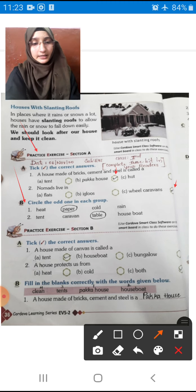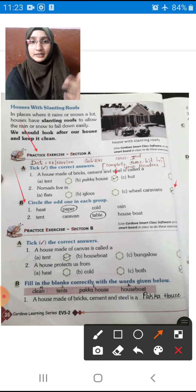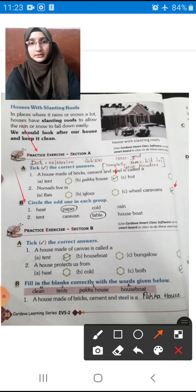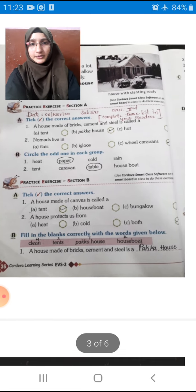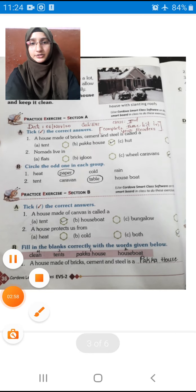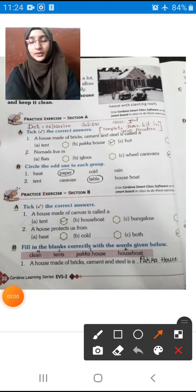Second one: Tent, caravan, houseboat, table. Tent, caravan and houseboat - these three are the different kinds of houses. But this table is different from them. So we have to put circle to the table children. Now, come up to the next bit: Practice exercise section B. Here, tick the correct answer. Now we have to read and put the right mark children.